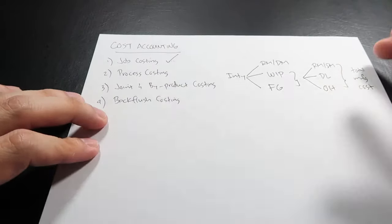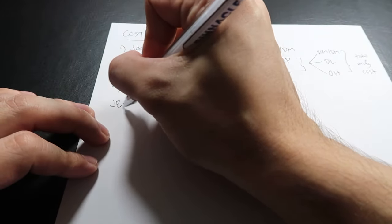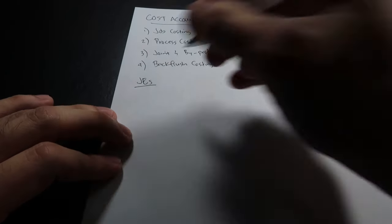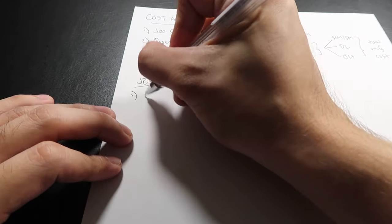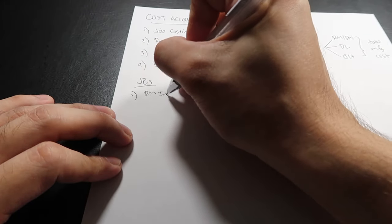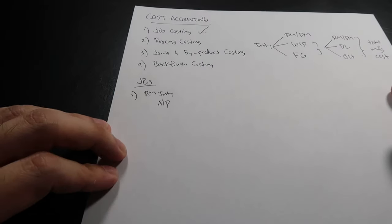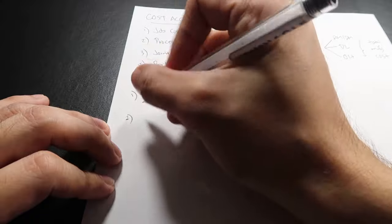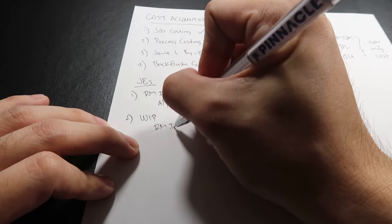We call these three the total manufacturing cost. For today we will focus on job costing, and the best way to illustrate job costing is through journal entries. First entry: purchase raw materials — debit raw materials inventory, credit accounts payable. Second: put materials into production — debit work in process, credit raw materials inventory.